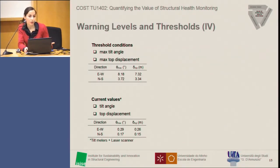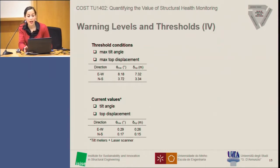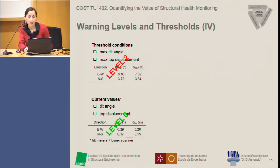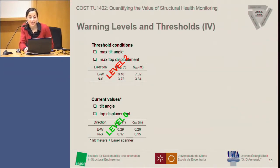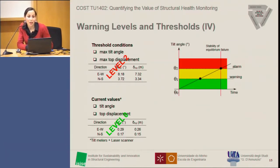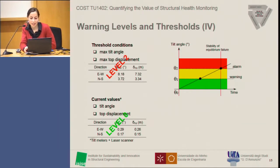We compared these threshold values with the current values of the structure, based not only on tiltmeter readings but also on absolute values from laser scanning surveys. We could confirm that so far the structure is behaving within a normal range — it is still at level zero. To reach the alarm level, the tilt trend would need to change consistently. So far, we are in a completely safe condition.